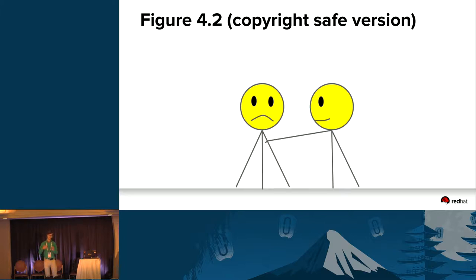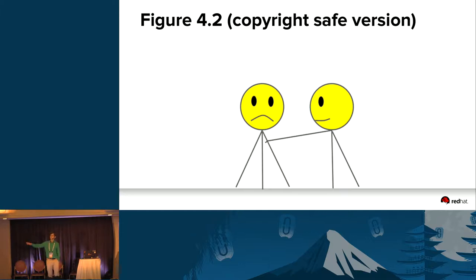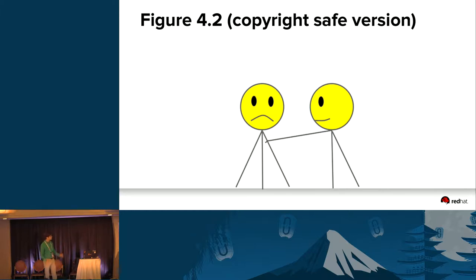It said one of the most important virtues to have as a nurse is the ability to show empathy — to understand what another person is feeling or thinking. One of the ways you can demonstrate empathy is by placing your hand on someone's shoulder. See figure 4.2. I've created a copyright-safe version; I didn't want to use the actual picture.